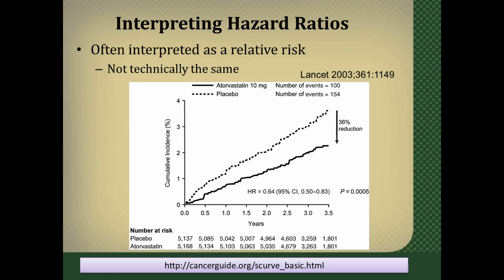What does a hazard ratio of 0.64 mean? People in the atorvastatin group at any individual time point are 36% less likely to experience an event than people in the placebo group — referring to any particular time along the course of follow-up. In contrast, relative risk doesn't care about everything going on along the way; it only concerns the total number of events at the end of the study. A hazard ratio addresses all the little time periods of follow-up throughout — what is the ratio of events in the atorvastatin group compared to the placebo group. A subtle but important distinction.